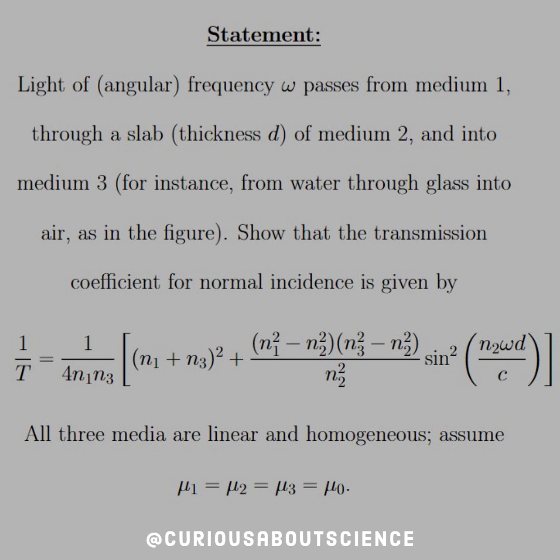The statement is: light of angular frequency omega passes from medium 1 through a slab thickness d of medium 2 and into medium 3, for instance from water through glass into air, as in the figure. Show that the transmission coefficient for normal incidence is 1 over T equals 1 over 4n1n3 times (n1 plus n3) squared and everything else there as you see. I'll give you a second to read that. Now, all three media are linear and homogeneous, so we can assume that mu1 equal mu2 equal mu3 equal mu0.